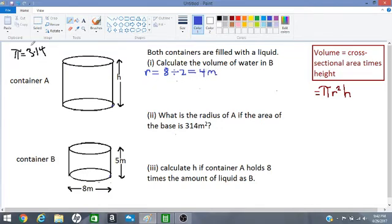Now let's apply the formula. We have pi up here as 3.14. We must use this value of pi. So the volume would be equal to 3.14 times 4 squared times 5, which is the height. This is the height here, 5.